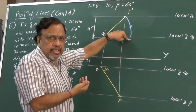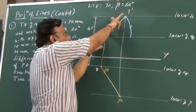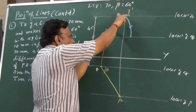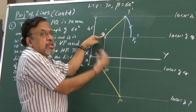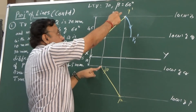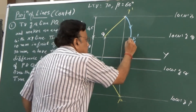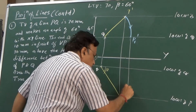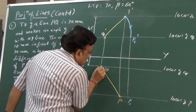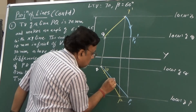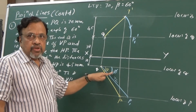Make this line parallel to XY in the front view, meaning the line is parallel to HP. Then I can determine its true length in the top view. I rotate with point Q fixed — moving P so the line becomes parallel to XY. Call this new position P1-dash. Since Q is fixed in the top view, P moves along its locus. Draw a projector through P1-dash to get P1 in the top view. Joining Q to P1 gives the true length (TL), and the corresponding angle is phi with reference to VP.